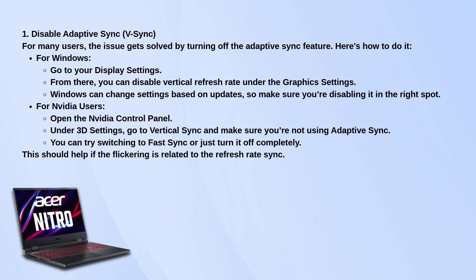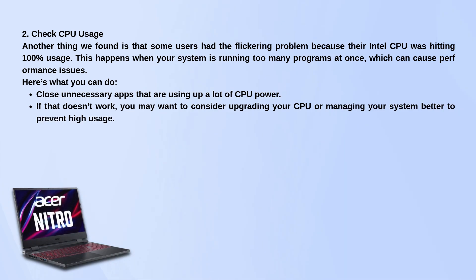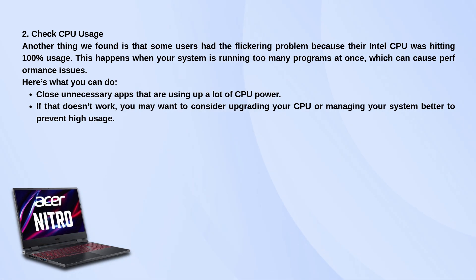Another thing to check is your CPU usage. If your Intel CPU is maxing out at 100%, that can cause the screen to start flickering or lagging. Open Task Manager, take a look at what's running, and close out anything that's eating up a ton of resources. If the CPU is still running hot or overloaded all the time, you might need to think about better cooling or just managing your startup apps and background processes better.